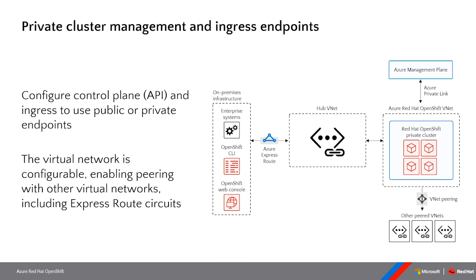Another key feature is the ability to have a private cluster. By default you'll have a public API server accessible via the OC command line interface. Many customers want everything private, so you can turn that to a private endpoint. If you do that, you'd need a bastion host or a VPN or Express Route to access your cluster for administration. You can also have private ingress — so if you don't intend to have any applications publicly exposed, you can set a private ingress and access those endpoints within your on-premise network or peered VNets.